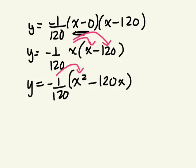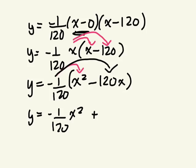Negative 1 over 120 times X squared. Negative 1 over 120X squared. What's negative 1 over 120 times negative 120X? Negative times negative is? 120 times 1 is 120. Divided by 120? 1. So I can just write X. That's it. That's the answer.